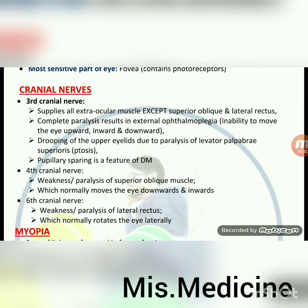Cranial nerves: third, fourth and sixth. Third — oculomotor; fourth — trochlear nerve; sixth — abducens nerve. Third cranial nerve (oculomotor) supplies all extraocular muscles except superior oblique and lateral rectus. Complete paralysis results in external ophthalmoplegia — inability to move the eye upward, inward and downward; drooping of the upper eyelid (ptosis) due to paralysis of levator palpebrae.